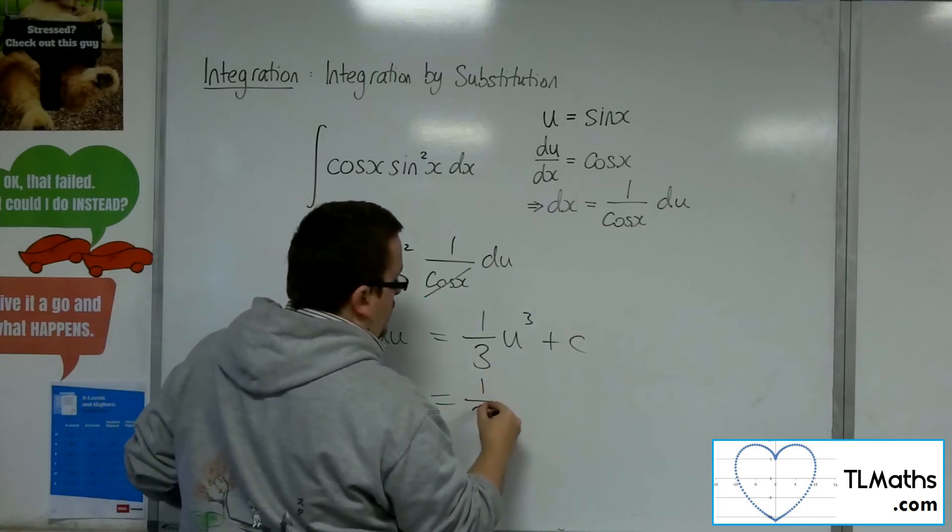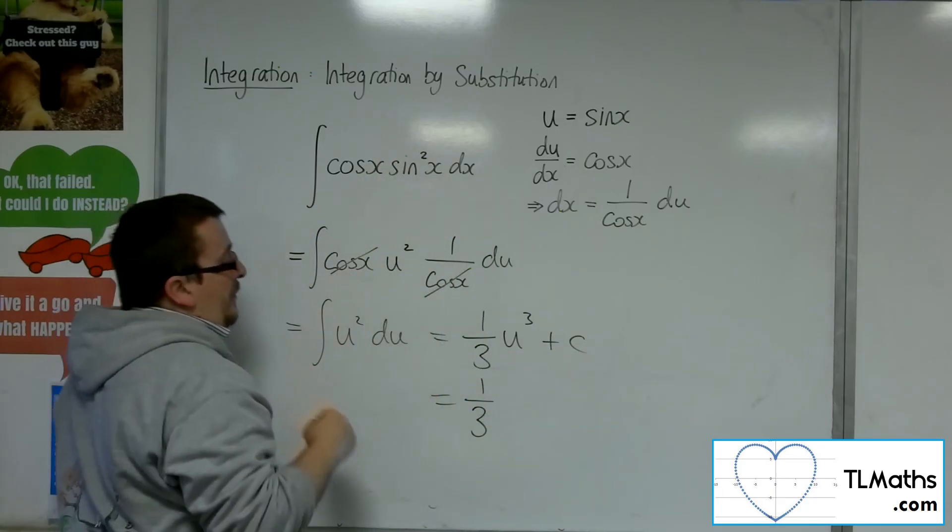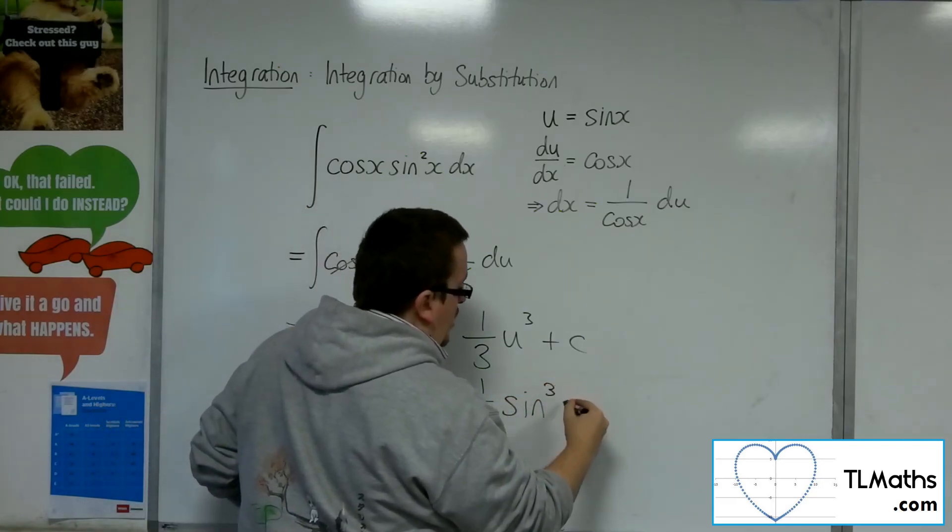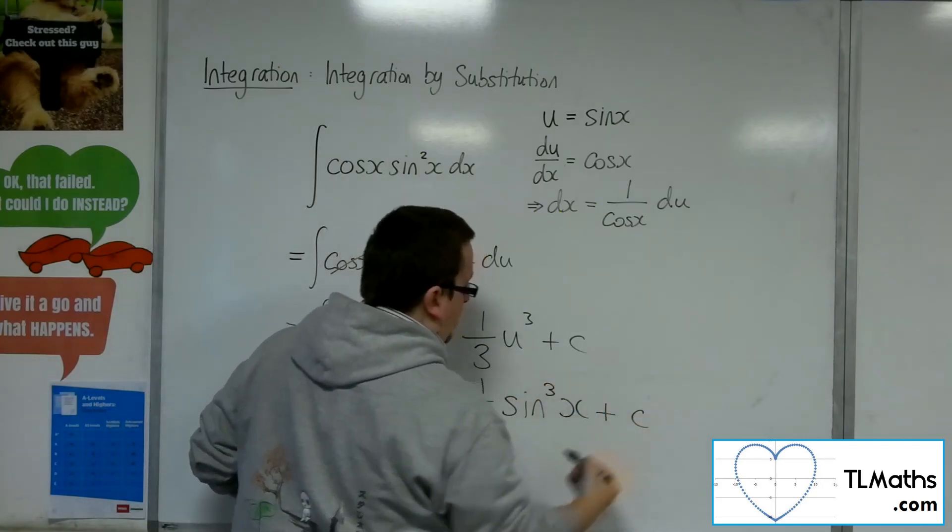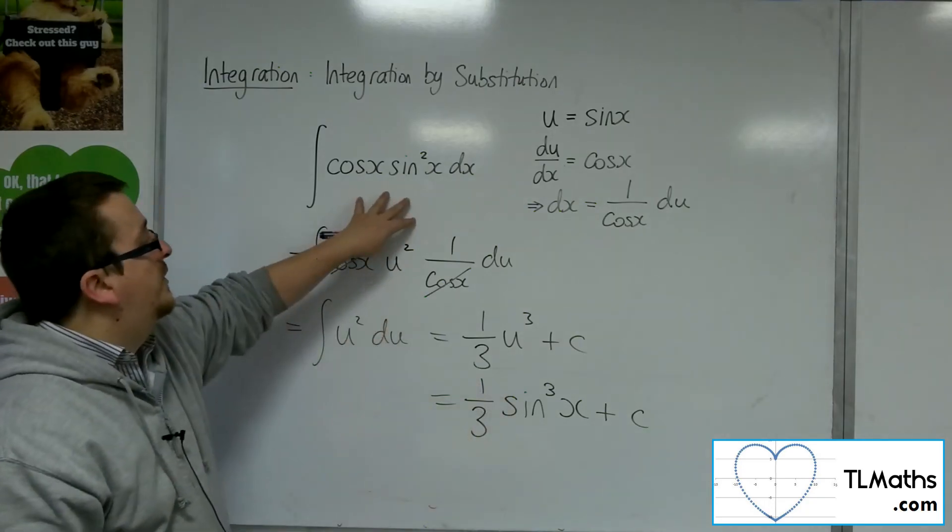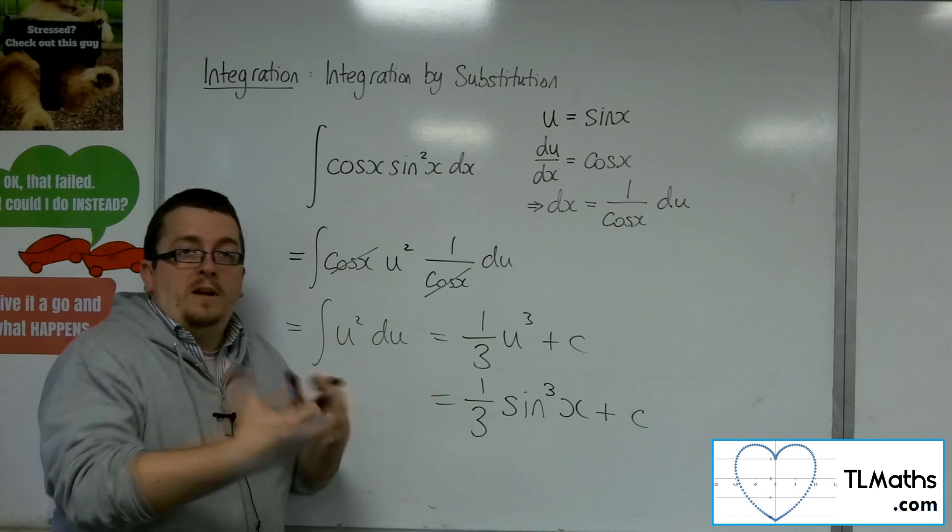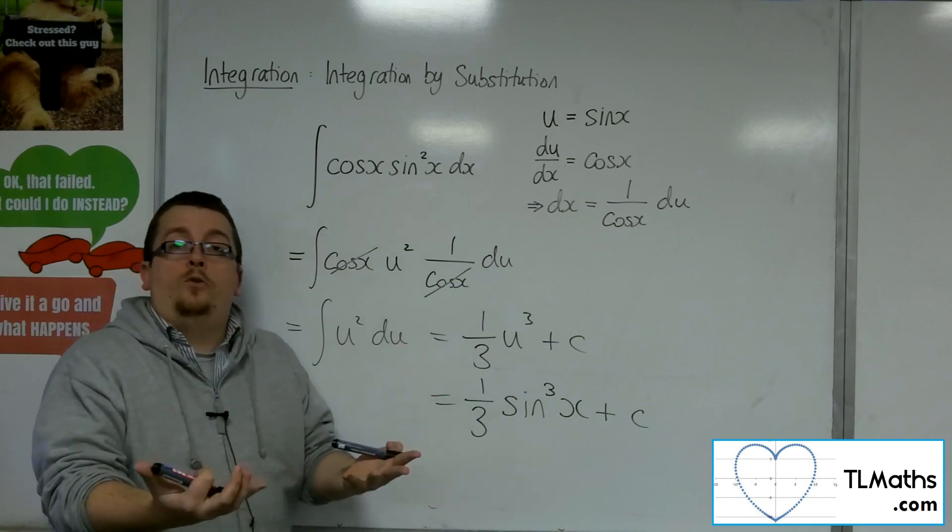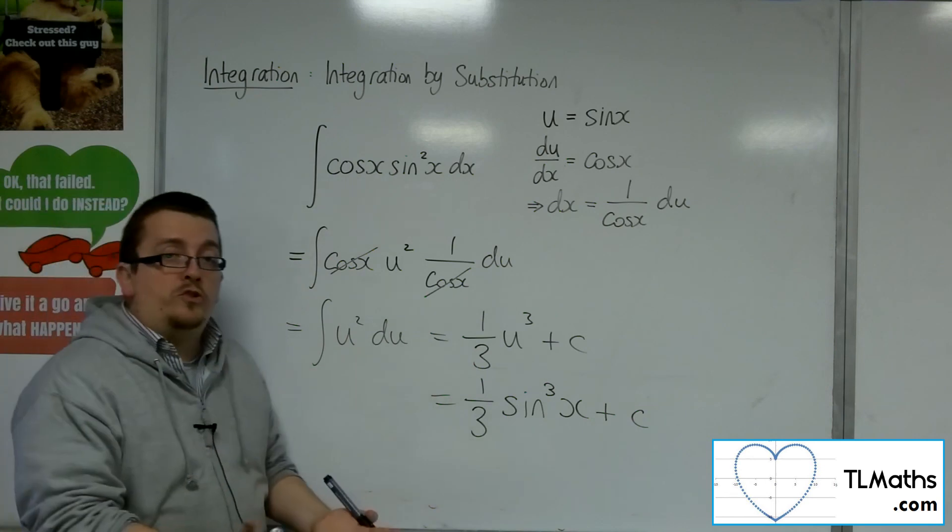and then I can substitute the u back in. The u was sine x, so this is 1 third sine cubed x plus c. OK, so that's how I integrate something that looks like that. In much the same way as I would all the other examples, it's just this one includes trigonometry.